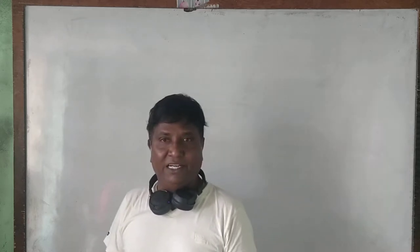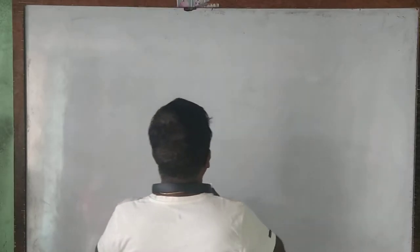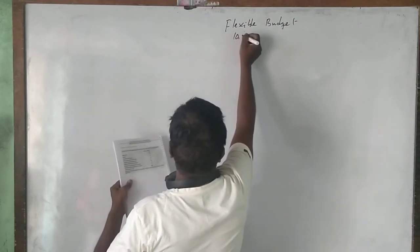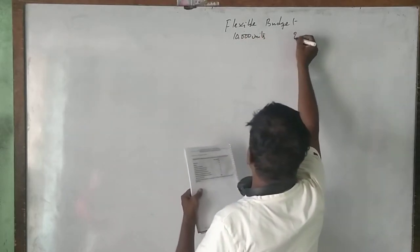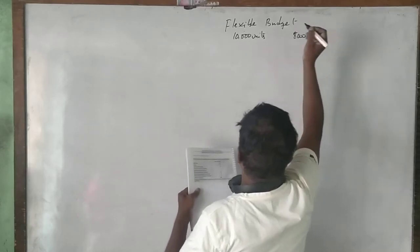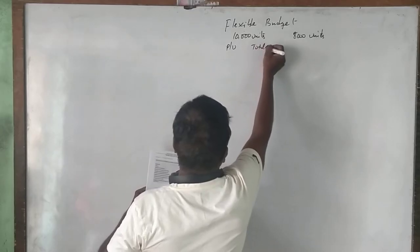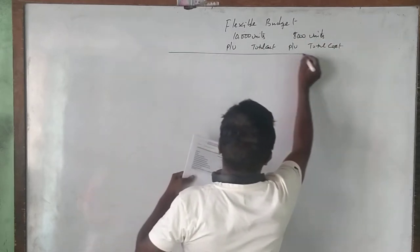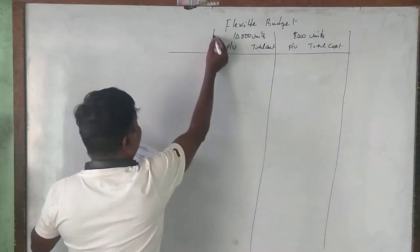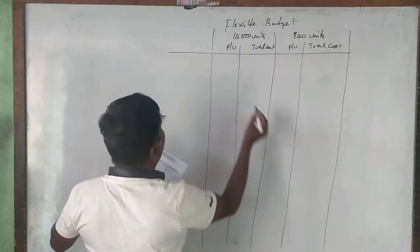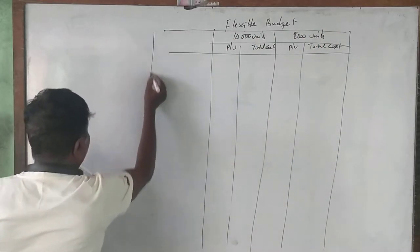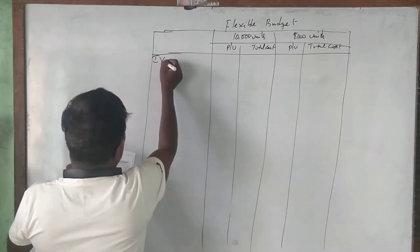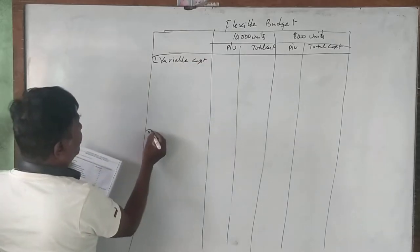We have to prepare a flexible budget for 8,000 units and 10,000 units. We need to show the variable cost and fixed cost separately.